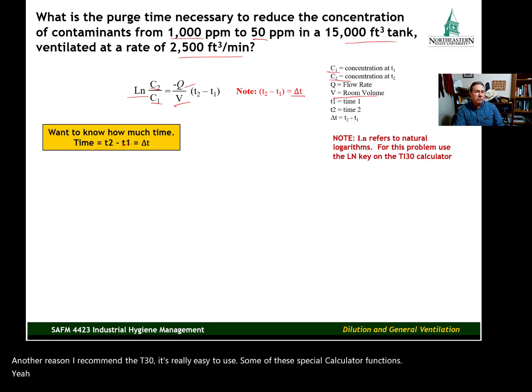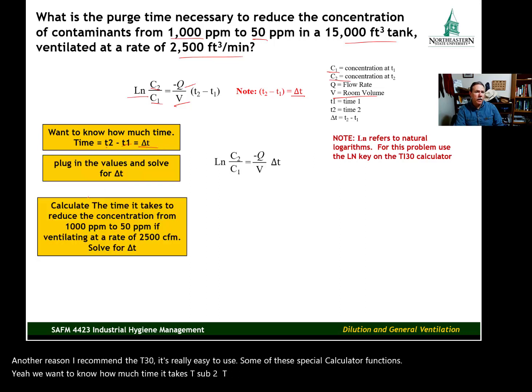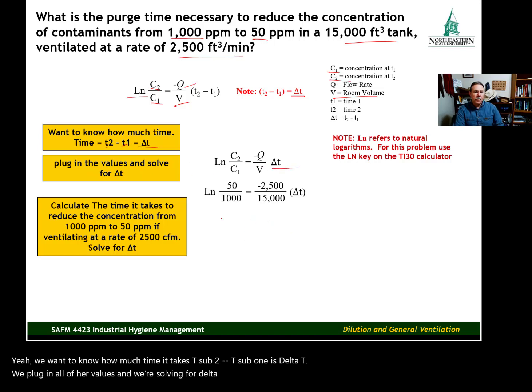We want to know how much time it takes. T sub 2 minus T sub 1 is delta T. We plug in all of our values and we're solving for delta T. Again, C sub 2 is 50 parts per million, concentration at time 2. Concentration when we begin at time 1, when we start the ventilation, that's 1,000 parts per million. Our ventilation rate is 2,500 cubic feet per minute, Q. Then the volume of the space is 15,000 cubic feet, and that's V. And now we just need to solve for delta T.